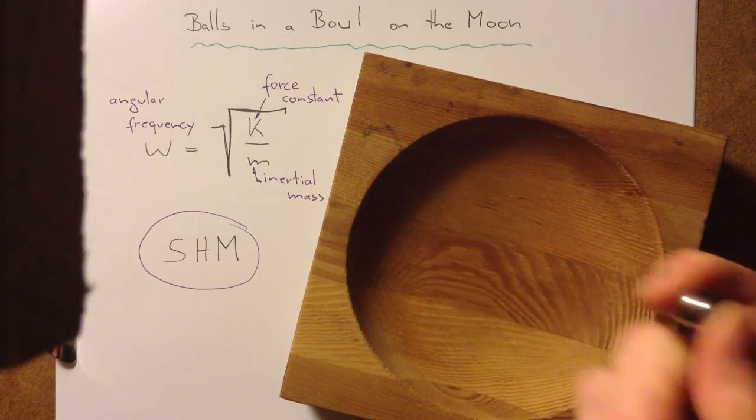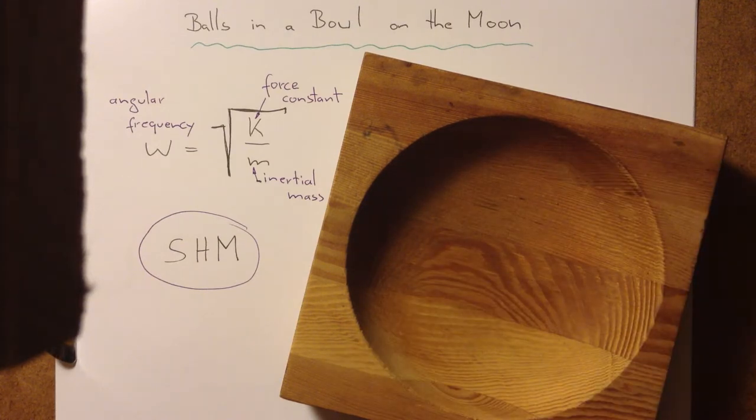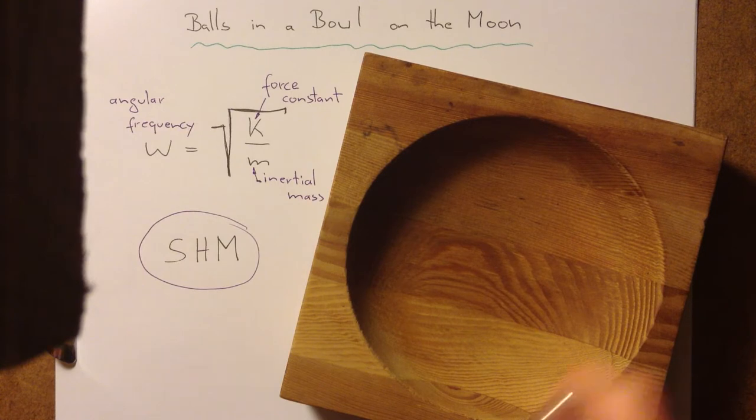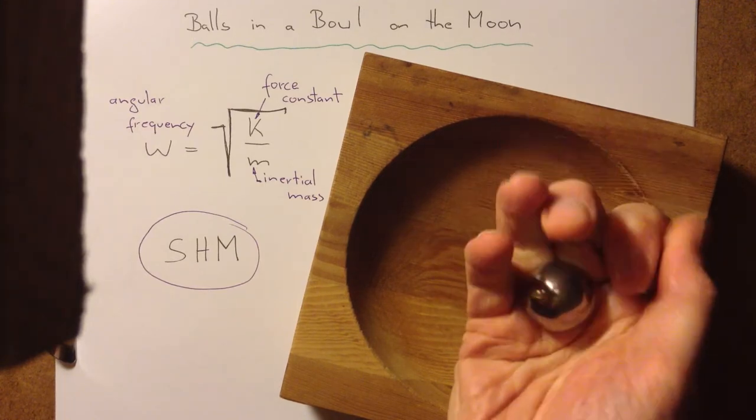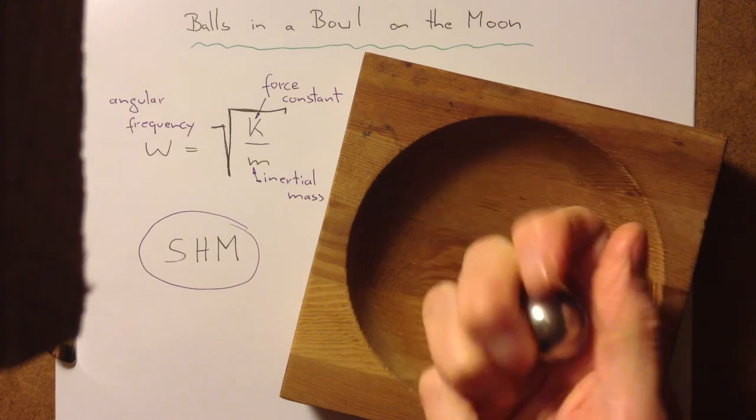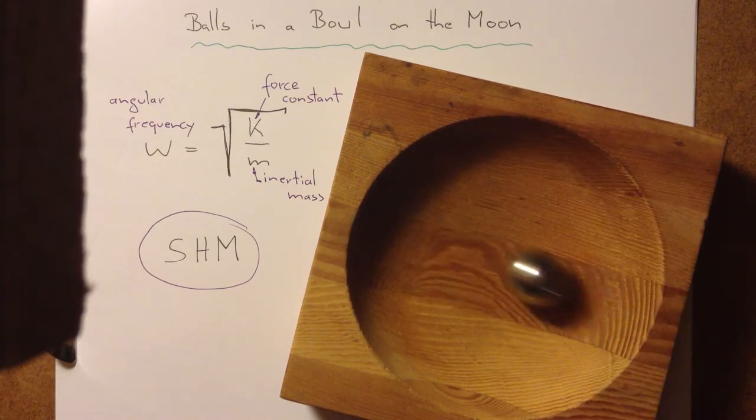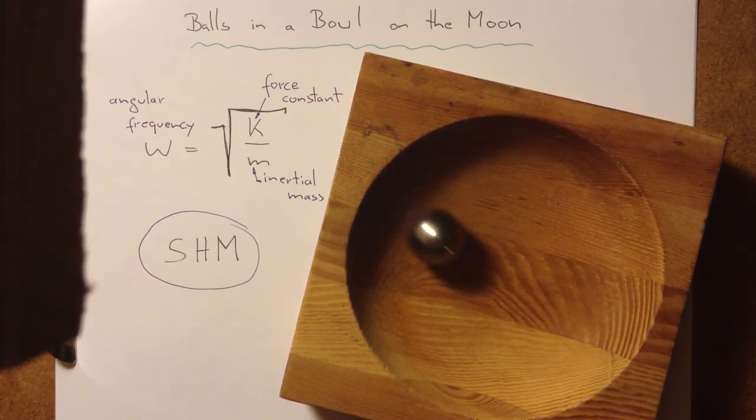Now, here I've got a bowl, which may be circular in curvature, and I've got an oscillator, a little ball bearing. It oscillates nicely with a certain frequency. Here I've got another ball bearing, clearly much more massive. Again, it oscillates nicely with a certain frequency.